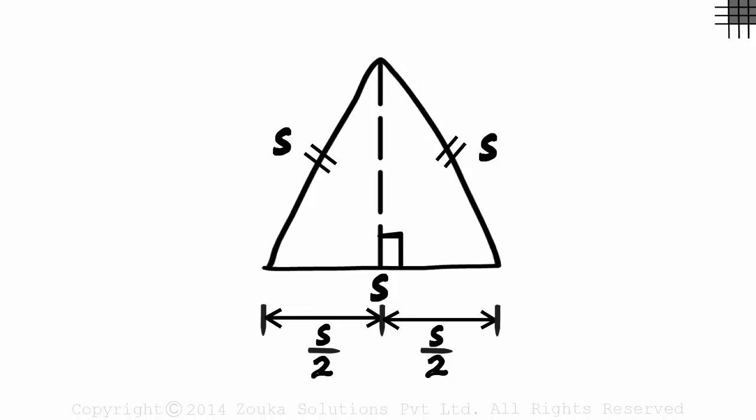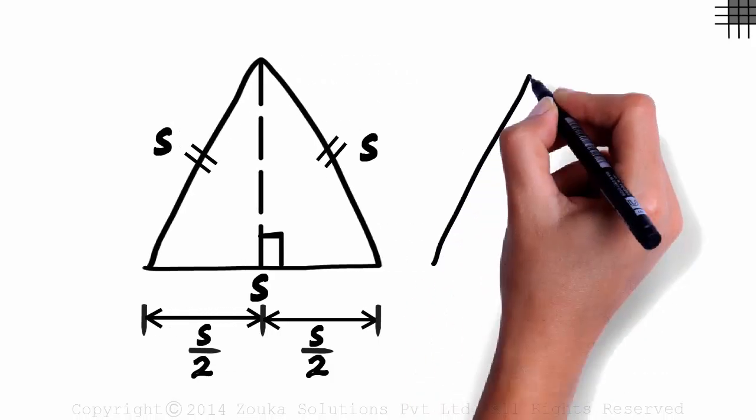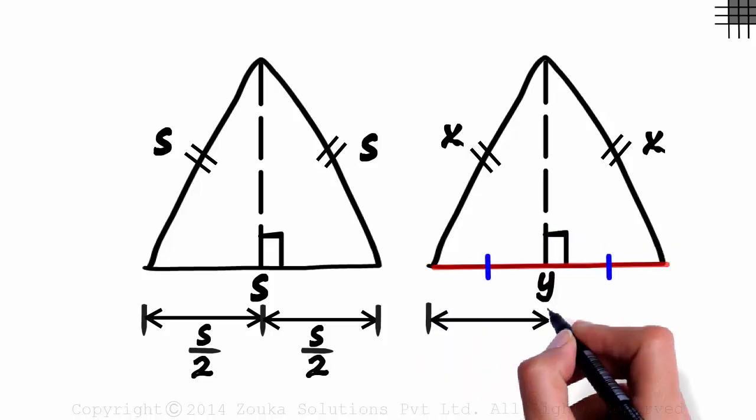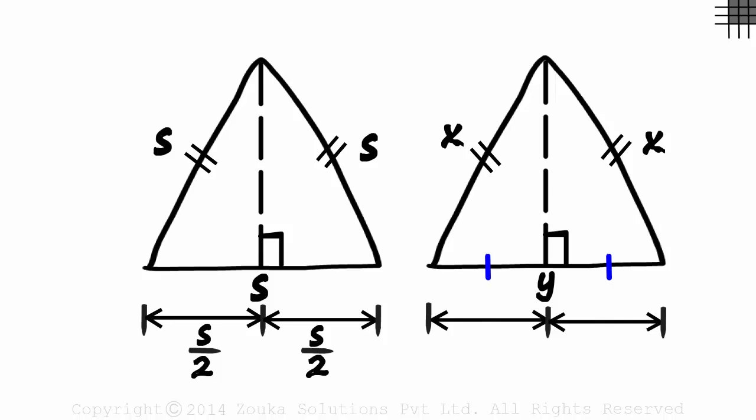This concept holds true even for an isosceles triangle. Here if we drop a perpendicular to this side, then these two lengths will be equal. Both will equal y by 2. So in a triangle, when we have two equal sides and we drop a perpendicular from the vertex joining the two equal sides to its opposite side, then that opposite side is divided into two equal parts.